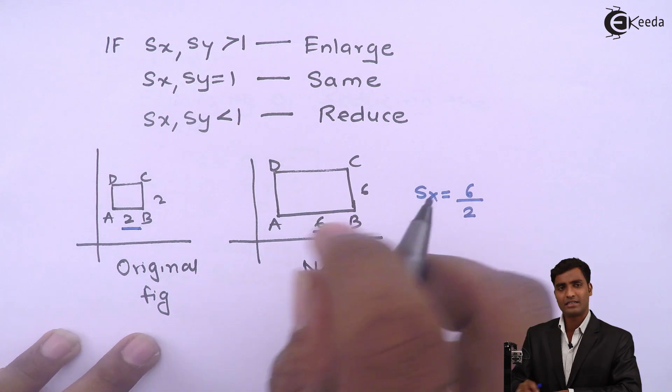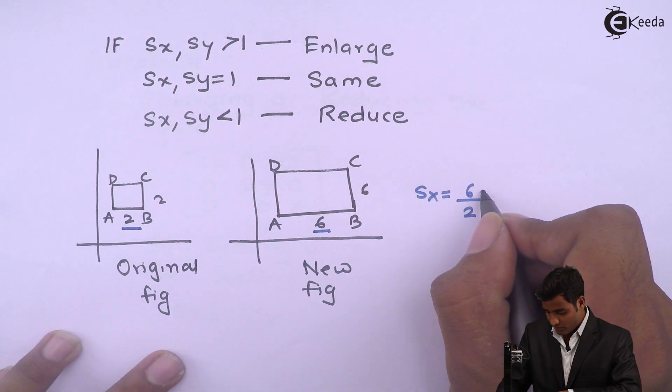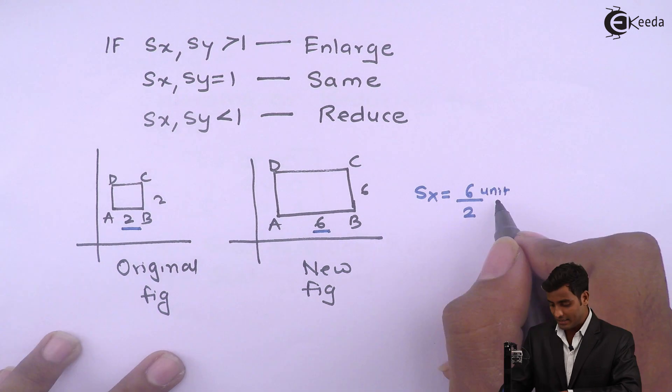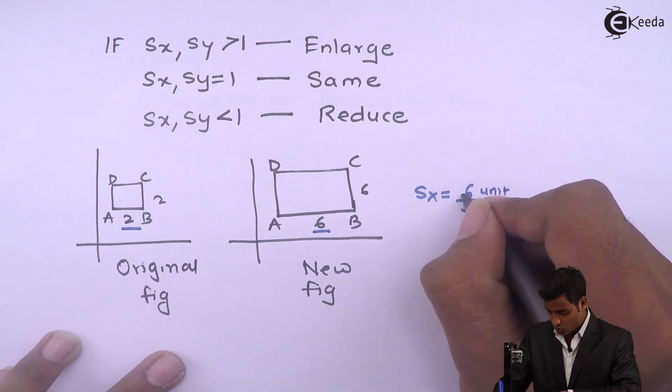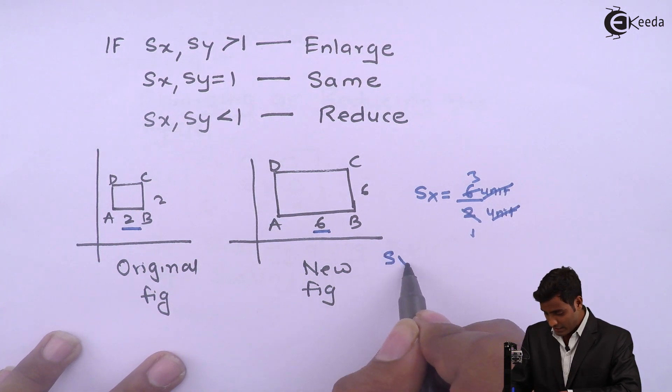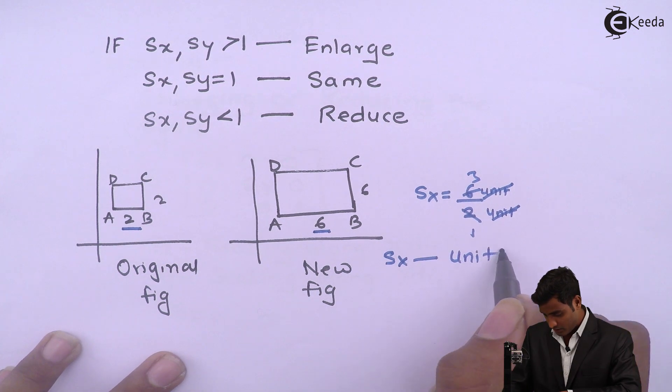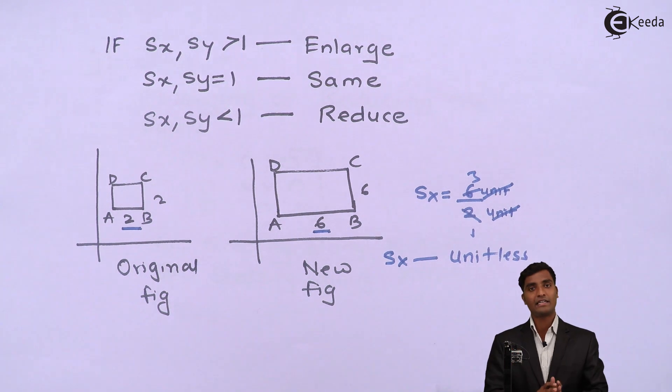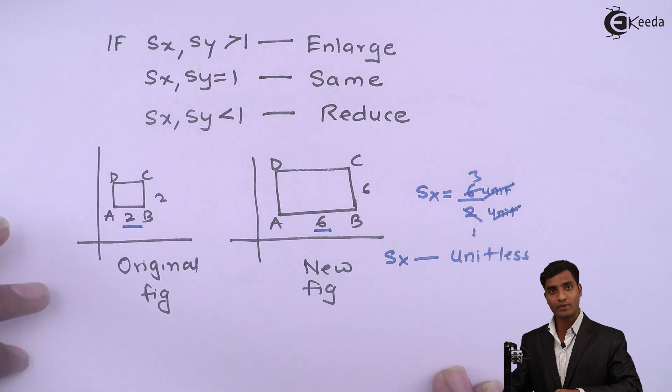Means it will have some unit. We will mention that unit. So 2 ones are, 2 threes are. Means this unit will also get cancelled which means that Sx is unitless. Means it is a factor or it can also be called as ratio. So we should keep in mind while solving the problems.